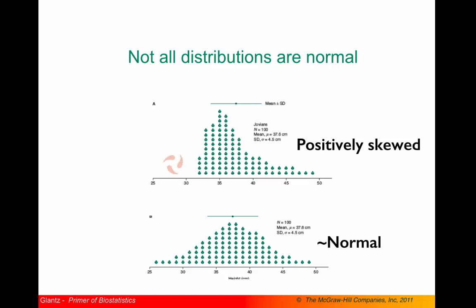There are, however, measurements that are not normally distributed. If the assumption that data are normally distributed is strongly violated, then it may be necessary to use different approaches for characterizing the distribution and for making comparisons between groups. The top distribution in this figure is positively skewed, where the mean is higher than where the peak of the distribution occurs, and there is a longer tail on the right.